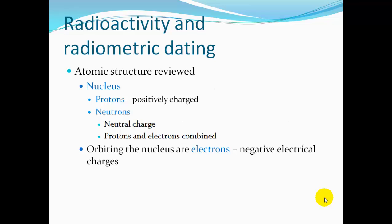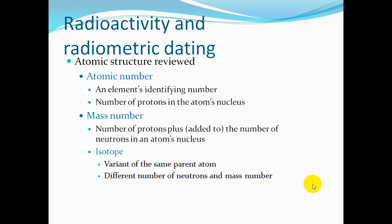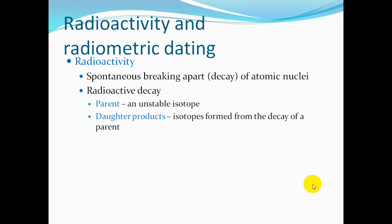Another tool we use is radioactivity and radiometric dating. To review atomic structure: the nucleus of an atom includes its protons, which are positively charged, and its neutrons, which are neutrally charged. Orbiting the nucleus are the electrons, with negative electrical charges. The atomic number is the element's identifying number — the number of protons in its nucleus. The mass number is the number of protons plus the number of neutrons in its nucleus. An isotope is a variant of the same parent atom with a different number of neutrons and a different mass number.